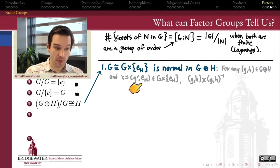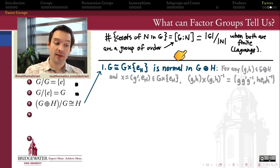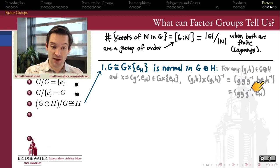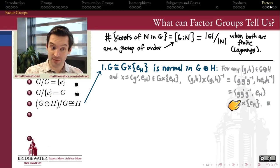To conjugate, I take (g, h) multiplied by (g', e_H) multiplied by the inverse of (g, h). When I do out that arithmetic, I get something with g·g'·g⁻¹ in its first entry, and h·e_H·h⁻¹ in the second entry. In the second entry, h times the identity element times h inverse simplifies to just the identity element of H, since the identity property cancels it out. So this new element is (some element of G, e_H), which belongs to my subgroup. Therefore my subgroup is closed under conjugation, which is why this subgroup is a normal subgroup of the external direct product.